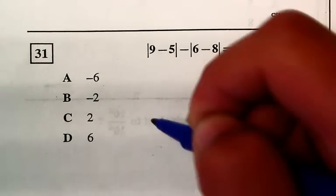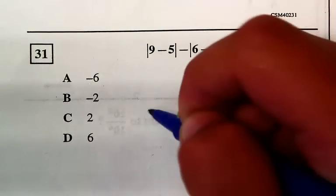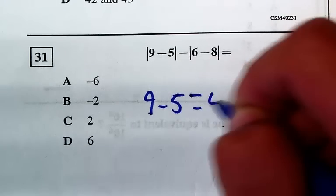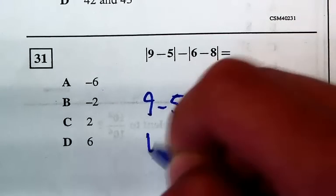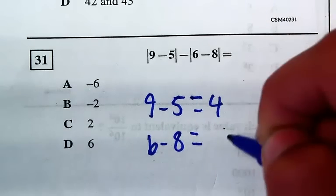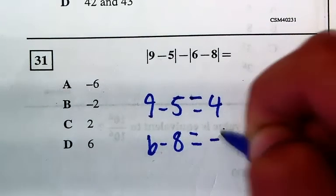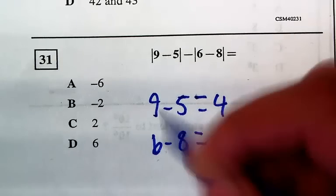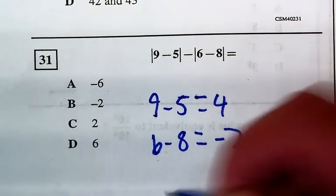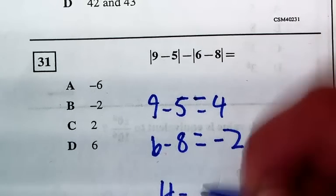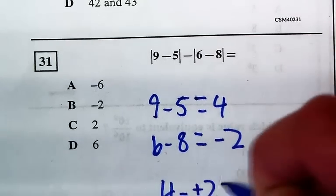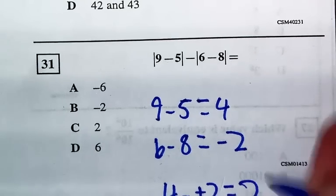When you're doing problem 31, the first thing you do is 9 minus 5, which is 4, and then you do 6 minus 8, which is negative 2. A positive minus a negative equals a positive, so 4 minus a positive 2 equals 2. And you would get C.